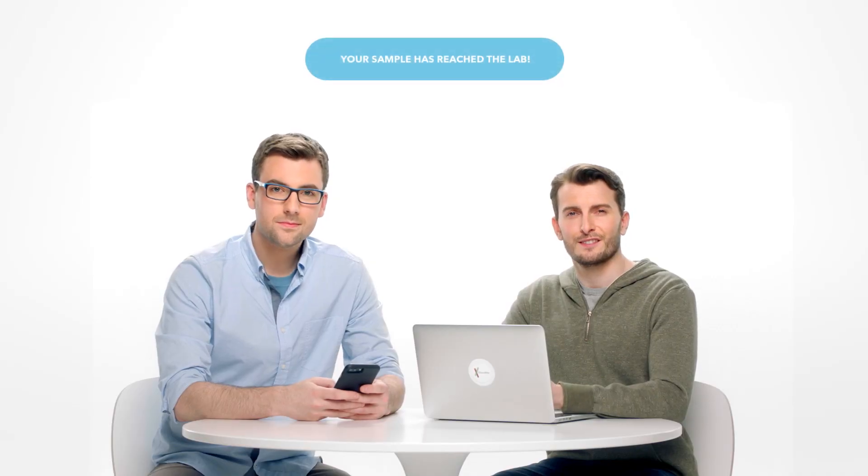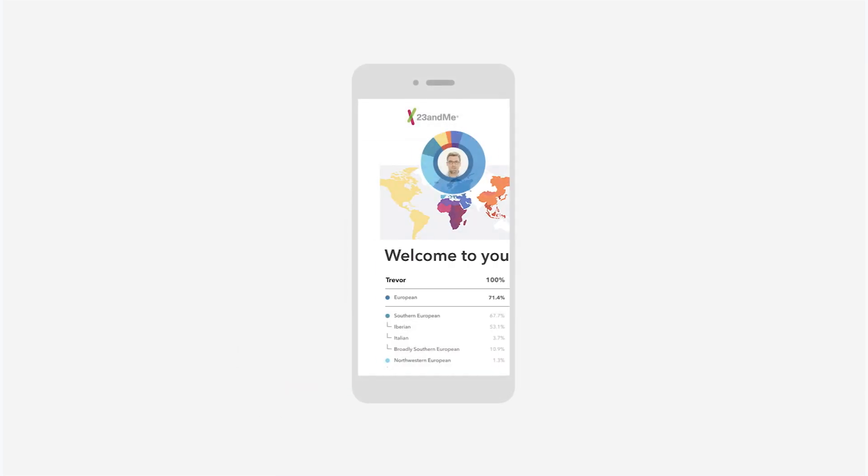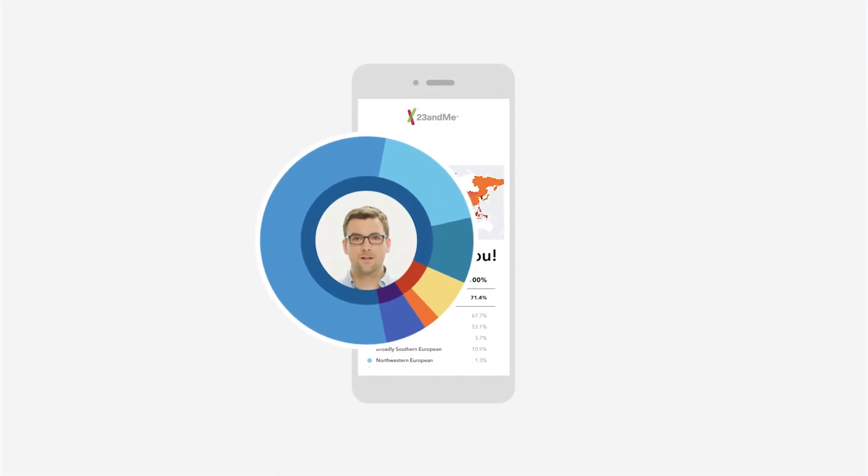You'll receive updates letting you know your sample is being processed. You'll then be able to track your kit's journey to the lab through your private account. And then, about six to eight weeks later, receive an email letting you know your reports are in. And your genetic journey is about to begin.